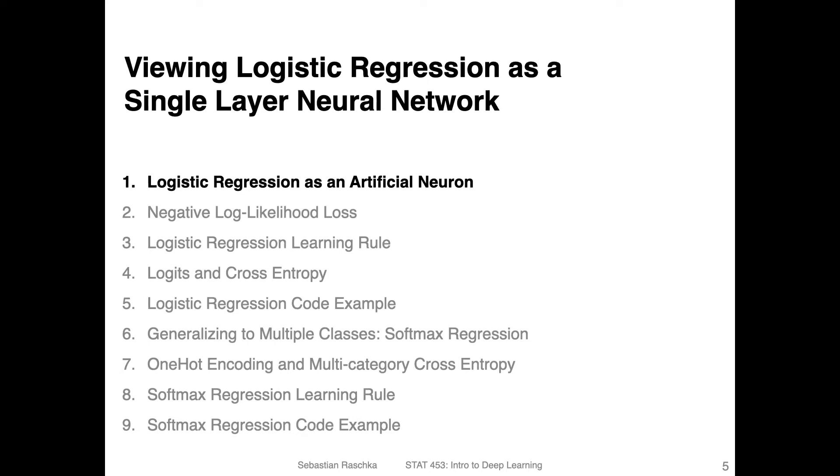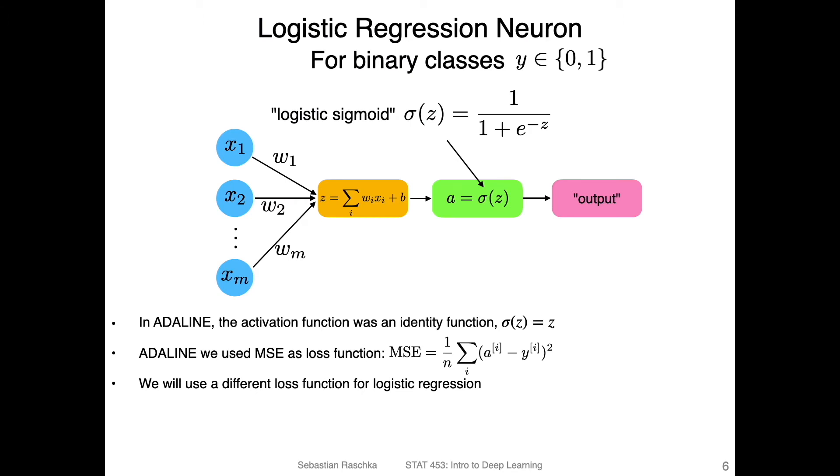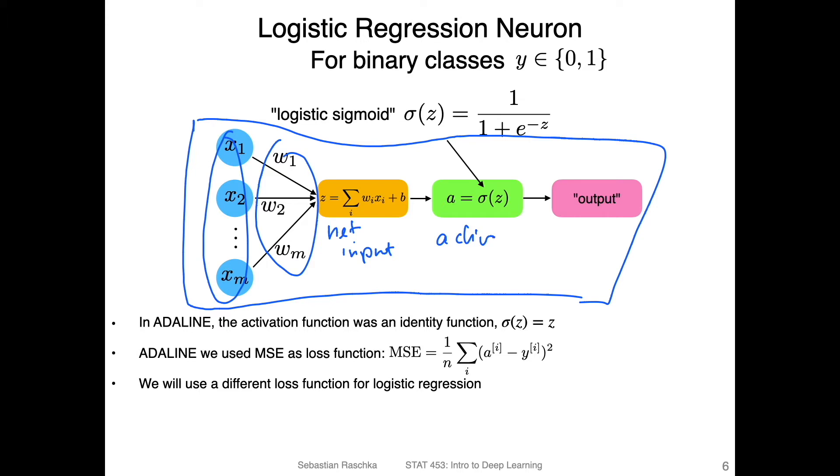Alright, let's dive into the topic of logistic regression by viewing it as a single layer neural network. This is why I emphasized the identity function in ADALINE so much. If we look at this figure here, this is a single layer neural network where we have the inputs x, the weights w, and then we compute the net input here and the activation here. And then an output here where we could, for example, apply a threshold function.